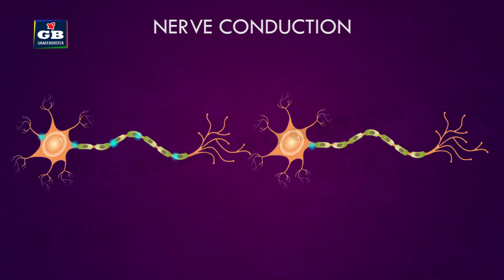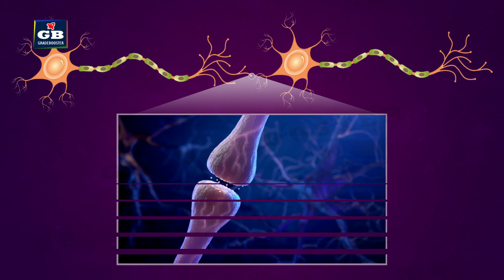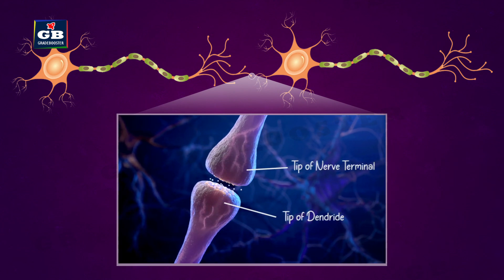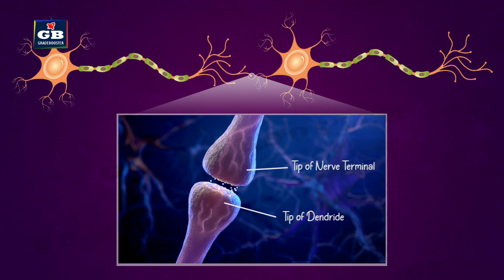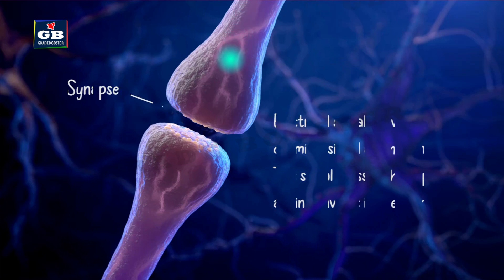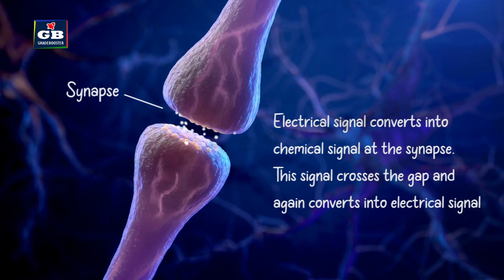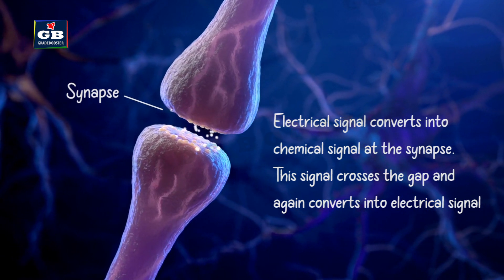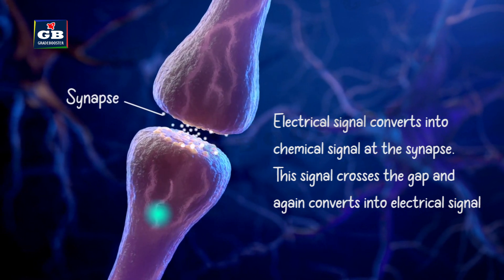Neurons collect nerve impulses through their dendrites and pass them to other neurons via their nerve endings. The nerve endings of one neuron and dendrites of another are not directly attached — there is a gap between them called a synapse. At the nerve terminals, the electrical impulse is converted to a chemical signal, which crosses the gap and reaches the dendrites of the next neuron, where it is converted back into an electrical signal.